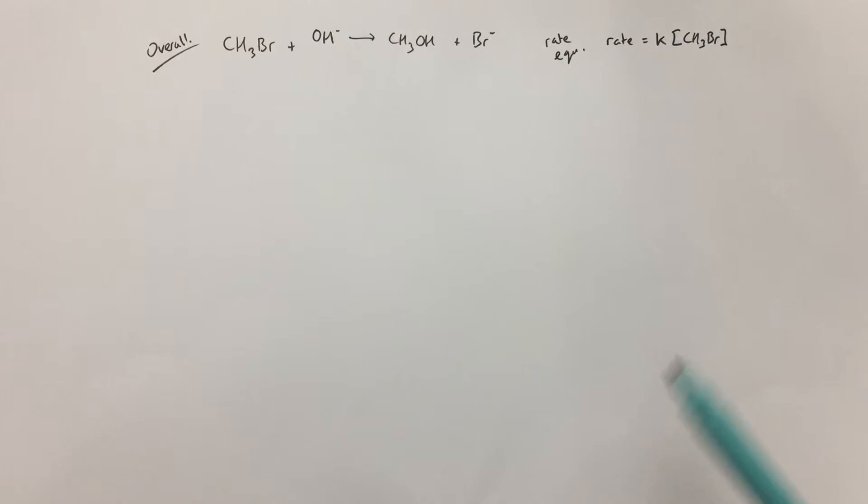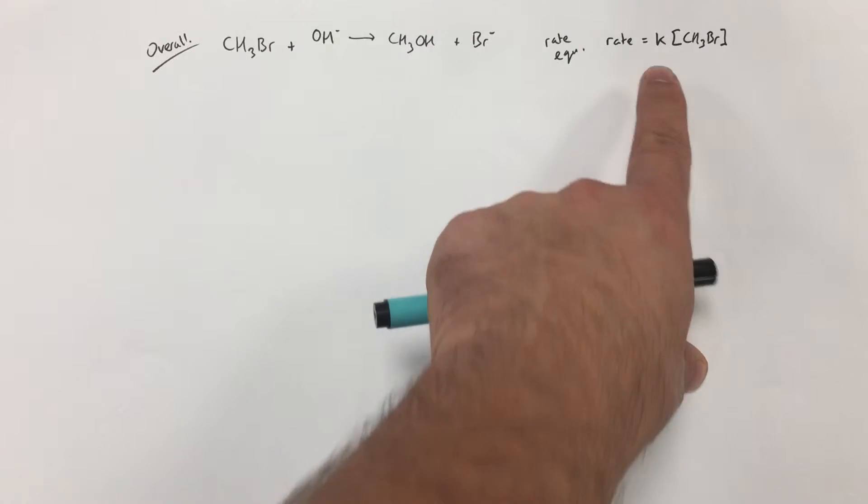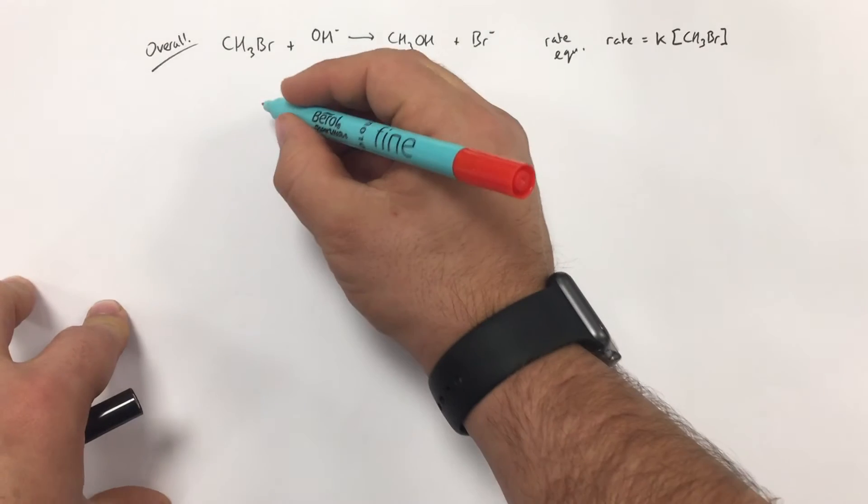You can see that OH minus isn't in the rate equation, and that has a significant consequence. If a reactant does not appear in the rate equation, it is not involved in the rate determining step—it is not involved in the slowest stage of a reaction.